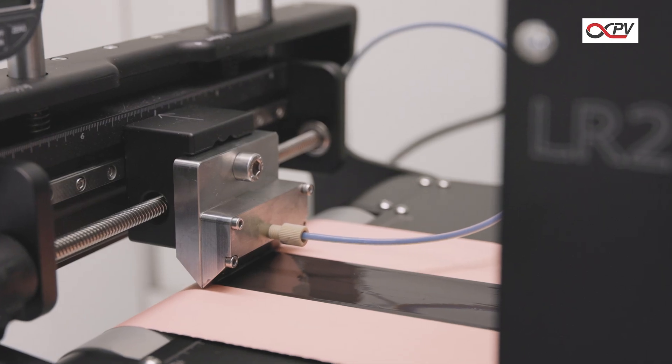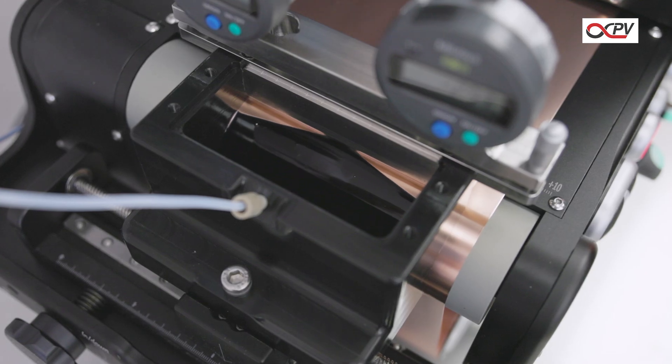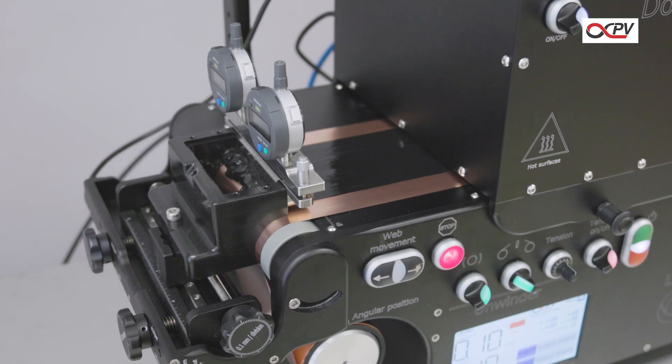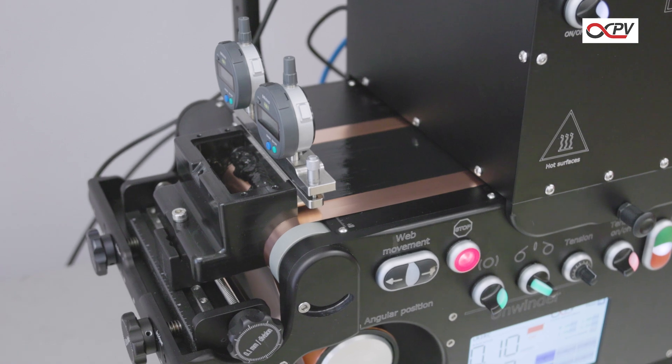In contrast to slot die coating, the inherent movement of the roller serves to agitate the ink, which is often crucial for suspensions and inks with large particles and aggregates.